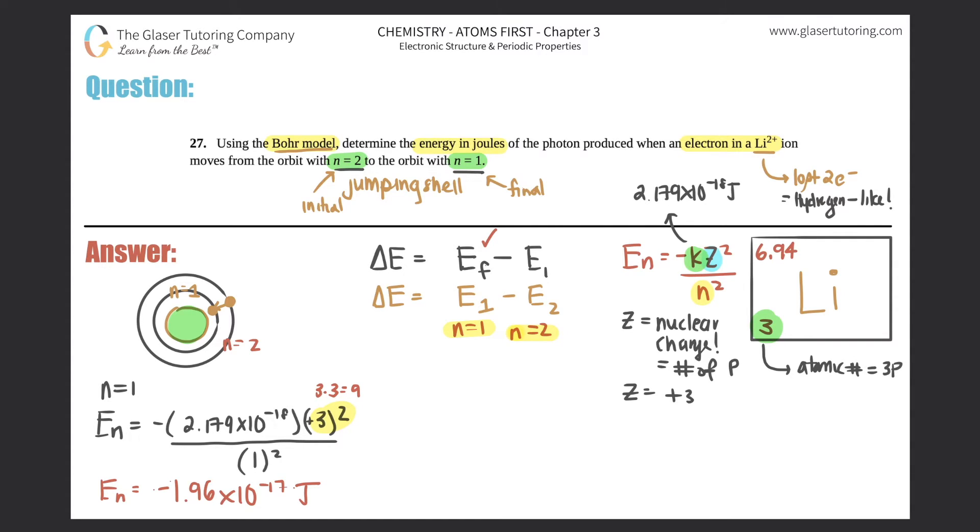So the energy of the first shell would be negative 2.179 times 10 to the negative 18th times 9. So I get negative 1.96 times 10 to the negative 17th joules. We got the first part.